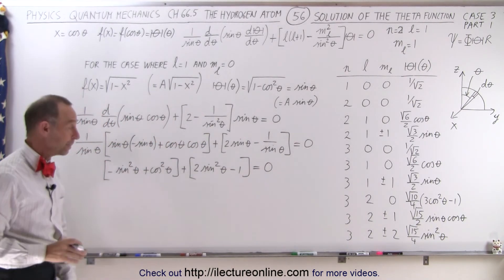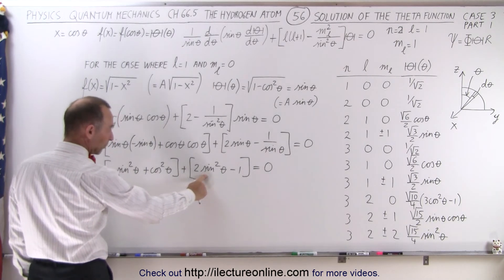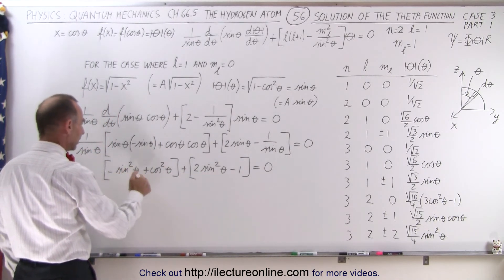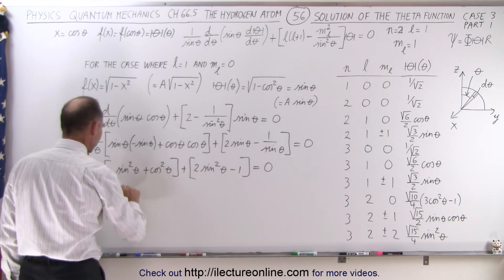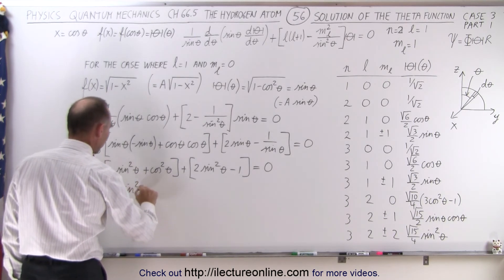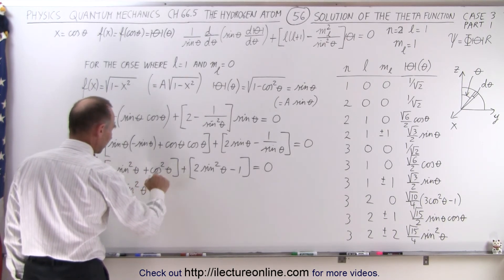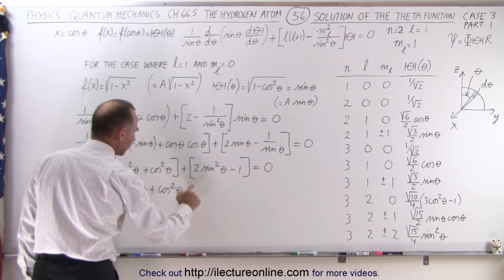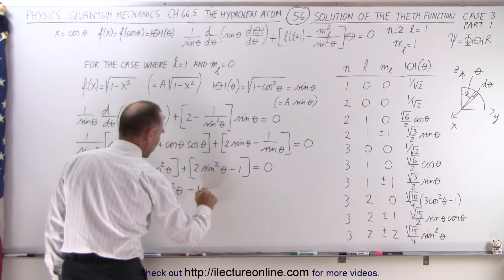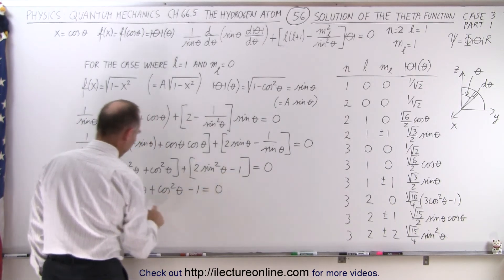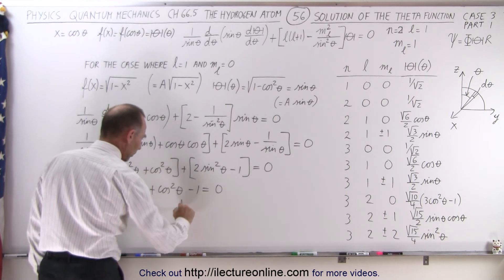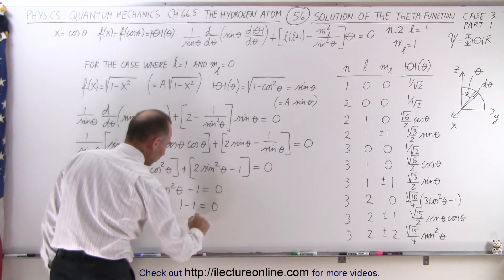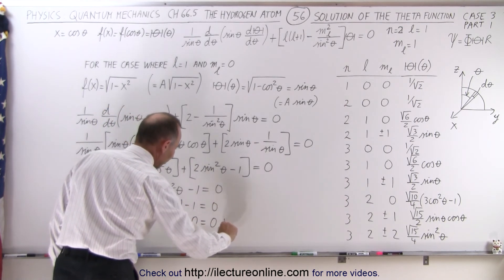Things are starting to shape up. Notice we have 2 times sine squared of theta minus sine squared of theta, which simply becomes sine squared of theta. Plus cosine squared of theta, and minus 1 equals 0. Of course sine squared plus cosine squared equals 1, so 1 minus 1 equals 0, or 0 equals 0.